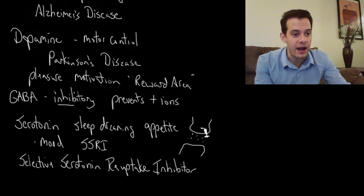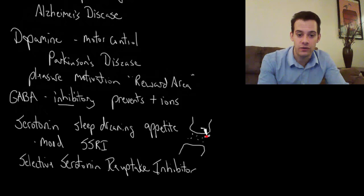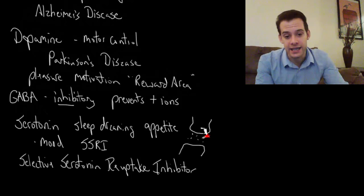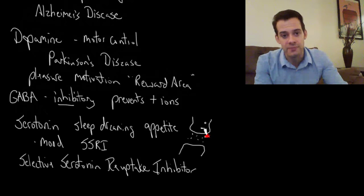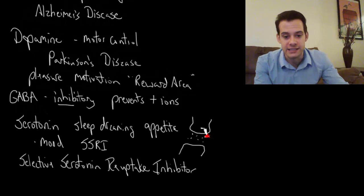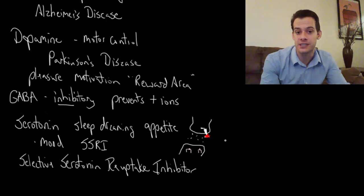What a SSRI drug does, a selective serotonin reuptake inhibitor, is it gets in here and it blocks the reuptake channel. It essentially clogs up the vacuum so it doesn't work anymore. This means that less serotonin is going to get sucked up into the presynaptic neuron and it's going to spend more time in the synapse. If it spends more time in the synapse then it's going to be more likely to find its way to these receptor sites and influence the postsynaptic neuron.